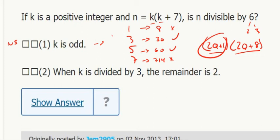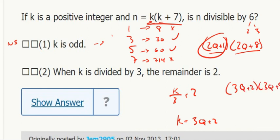Number 2: when K is divided by 3, the remainder is 2. So K equals like 3 times a number plus 2. Okay, so if we put that in for K up here, 3Q plus 2 times 3Q plus 2 plus 7.